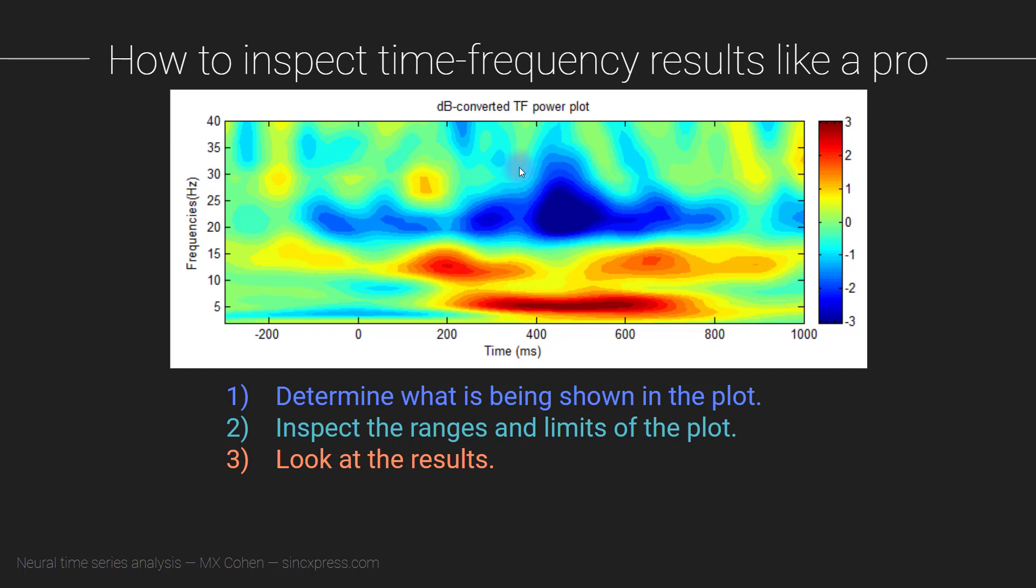Other things to look for are whether there are features in the time-frequency plot that are cut off by the axes. So for example, here you see some little blue patch, and we don't see the top of this blue patch. So we don't actually know from this plot whether this thing continues up, maybe this goes up to like 200 hertz, maybe this is a really broadband effect, or maybe it stops at 41 hertz, and it's just cut off on the plot.